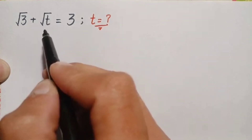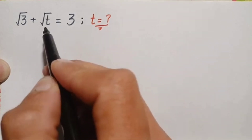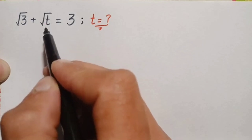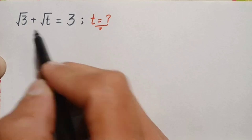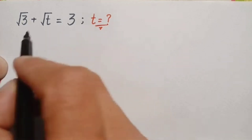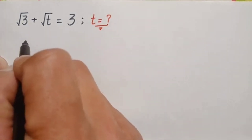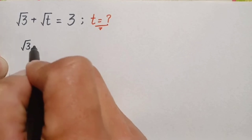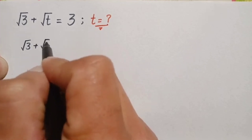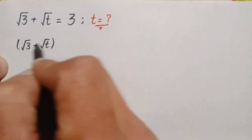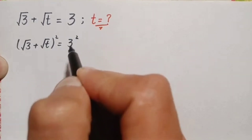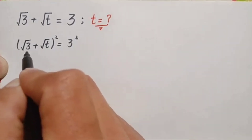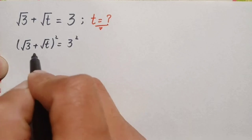Looking at the left hand side, there is a square root over t, so we have to eliminate this square from t and find out the value of t. To do that, we have to take the square on both sides. So this equation will become: square root of 3 plus square root of t, whole square, is equal to 3 squared.